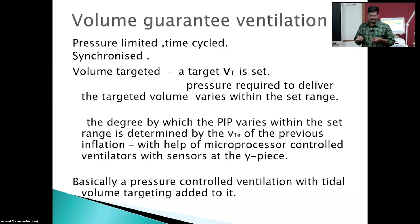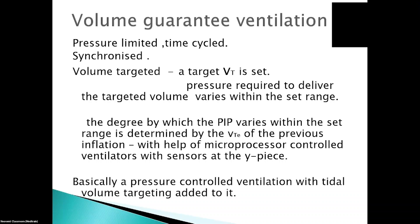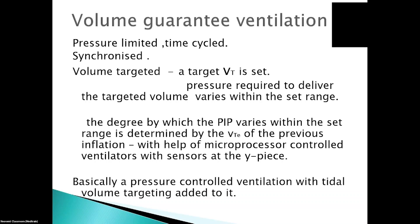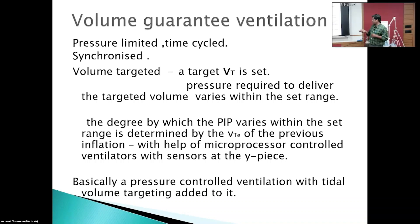In simple pressure-controlled ventilation, within the set Ti and synchronization, we achieve a tidal volume delivered to the baby. We are not actually controlling that tidal volume based on changes in lung mechanics. Here, we target a tidal volume set on the ventilator, and the peak inspiratory pressure moves up and down depending on the change in lung mechanics to deliver the target tidal volume. The degree by which the PIP varies is determined by the exhaled tidal volume of the previous breath.